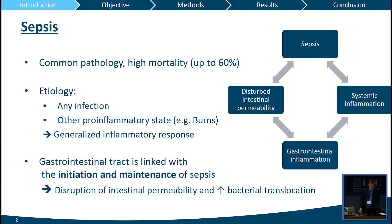The gastrointestinal tract plays an important role in sepsis, acting as either an initiator or a maintaining factor of sepsis. For example, when you have sepsis from another part of the body — not the gastrointestinal tract — it can lead to systemic inflammation and therefore induce gastrointestinal inflammation with disturbed intestinal permeability and bacterial translocation. On the other hand, when gastrointestinal inflammation is the primary cause, it can lead to systemic inflammation and, again, disturbed intestinal permeability. So it's actually a cycle.